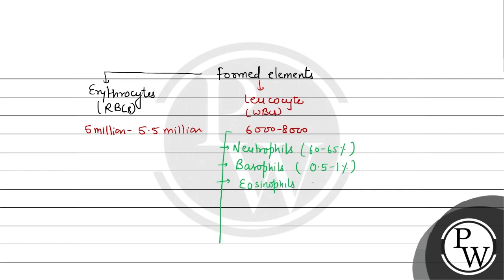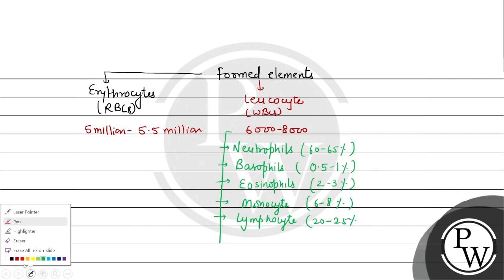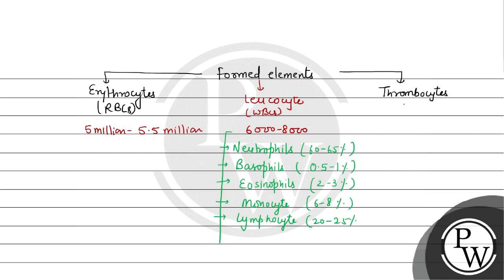If we talk about monocytes, monocytes are present at 6 to 8%, and lymphocytes, which are present at 22 to 25% of total WBCs. If we talk about another cell, that is the thrombocytes, which are the platelets, they are 1.5 lakh to 3.5 lakh.